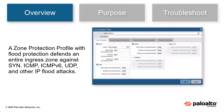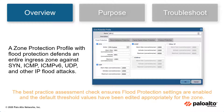A zone protection profile with flood protection defends an entire ingress zone against SYN, ICMP, ICMPv6, UDP, and other IP flood attacks. The flood protection best practice check ensures that all flood protection settings are enabled and the default threshold values have been edited so they are appropriate for the zone.